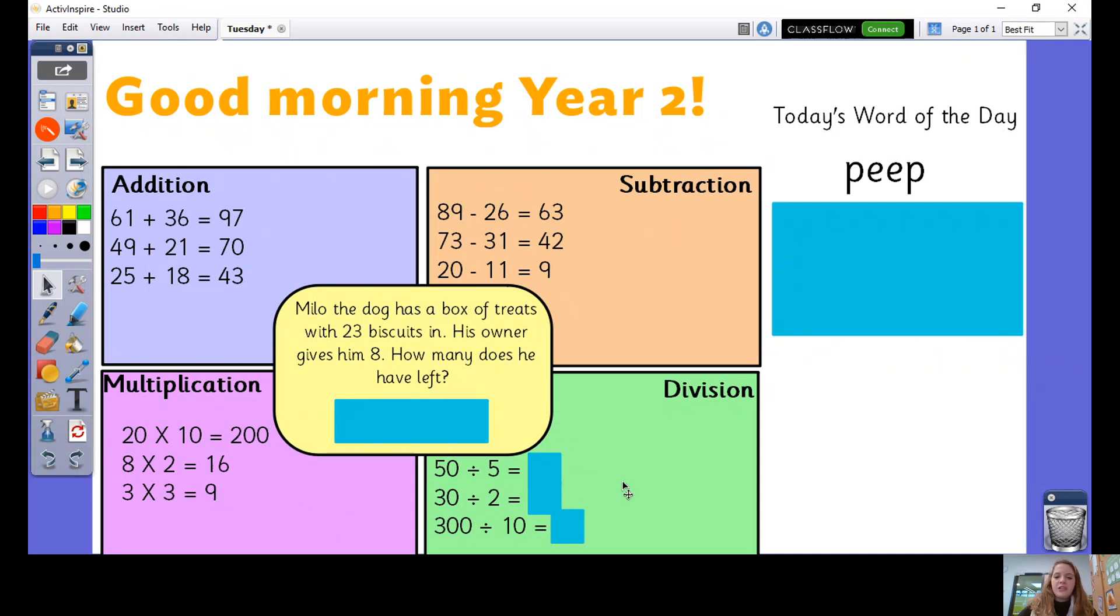Looking at our division then, 50 divided by 5 equals 10, 30 divided by 2 is 15, and 300 divided by 10 equals 30.